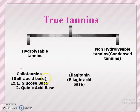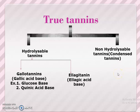Hydrolysable tannins are further divided into two parts: gallic acid-based tannins, known as gallotannins, and ellagic acid-based tannins, known as ellagic tannins. The second class is non-hydrolysable tannins, also known as condensed tannins. So in summary: the first classification is based on the gold beater's skin test, and the second is based on chemistry — hydrolysable tannins and non-hydrolysable tannins.